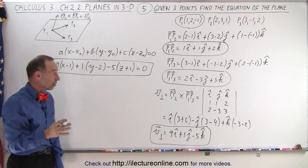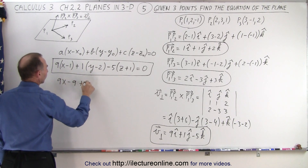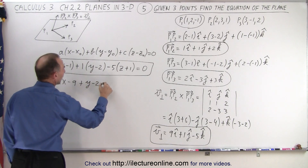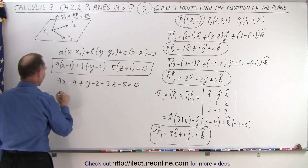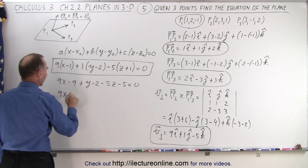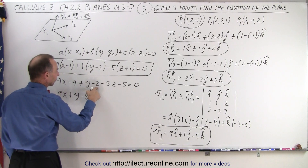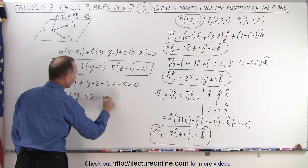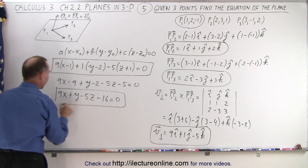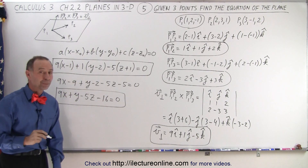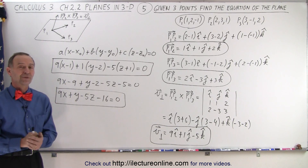Turning that into the general form, we get 9x minus 9, plus y minus 2, minus 5z minus 5, equals 0. So we get 9x plus y minus 5z, and we have minus 9 minus 2, which is minus 11, minus 5, which is minus 16, equals 0. And that would be the general form of the equation of that plane. And that is how we find the equation of the plane given three points.